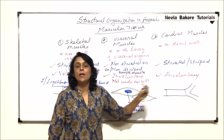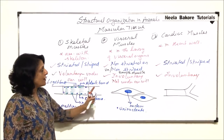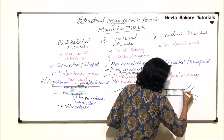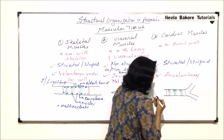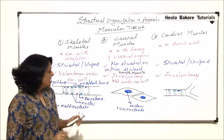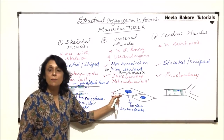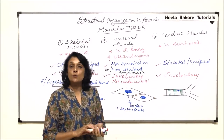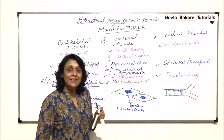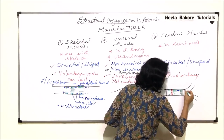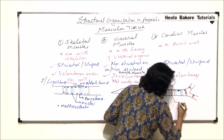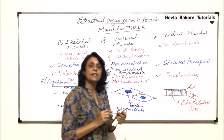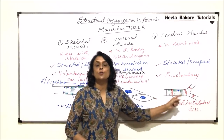Coming to the third type — cardiac muscle — it is a combination of both. It shows striations like skeletal muscle, but it is uninucleate. It has alternate light and dark bands with a single nucleus, so it shares structural features with striated muscle and functional features with smooth muscle, as both are involuntary. One more special feature of cardiac muscle is the presence of zigzag lines known as intercalated discs, which help in proper communication between the cells.